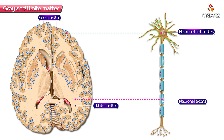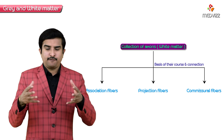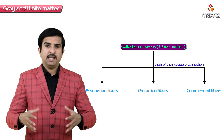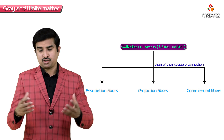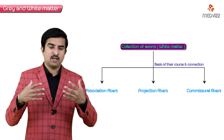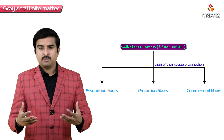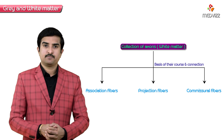Gray matter is essentially a collection of neuronal cell bodies, while axons traveling in bundles are called tracts, which form the white matter. These white matter tracts are classified based on their course and their connections into three types: association fibers, projection fibers, and commissural fibers.